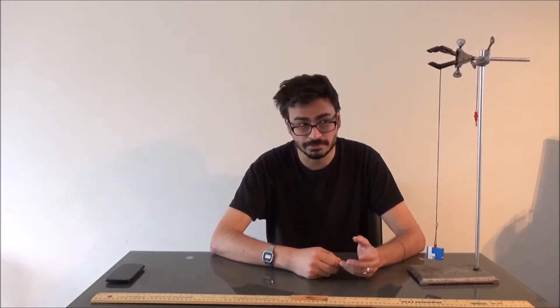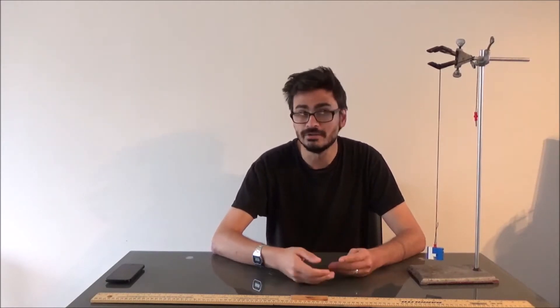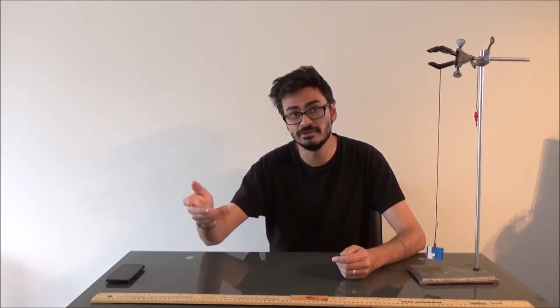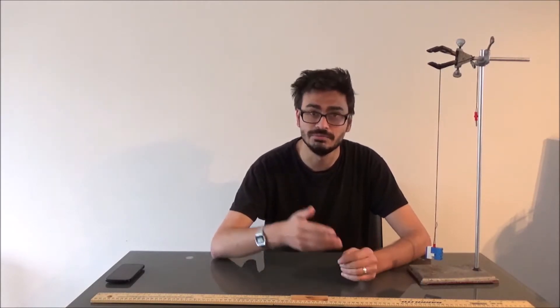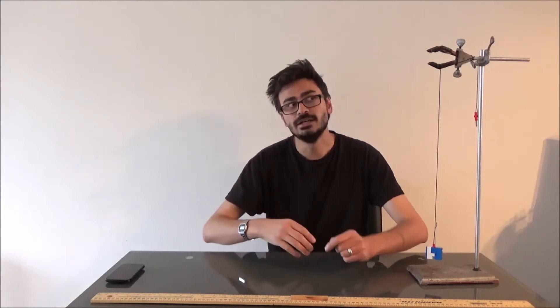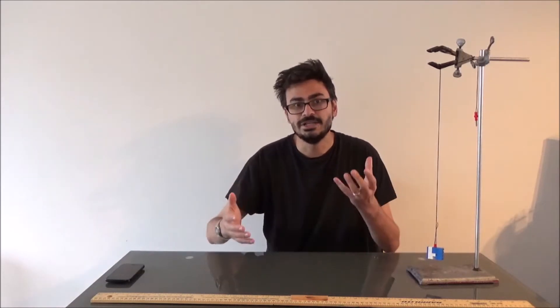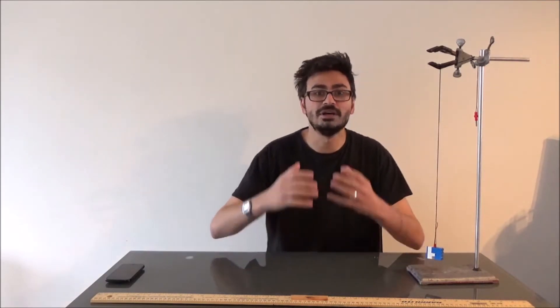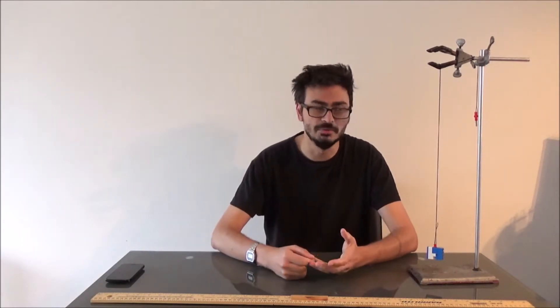We're also going to try and calculate from our data the gravitational field strength of Earth. Now the gravitational field strength of Earth we know to be 9.81 newtons per kilogram, or we could call that the acceleration due to gravity, as 9.81 meters per second squared. So our experimental data should give us a good indication of how good or how reliable our experiment was.